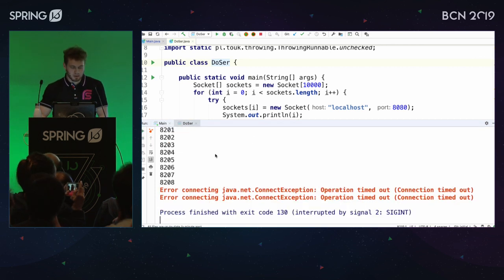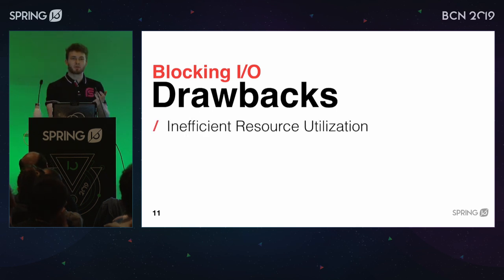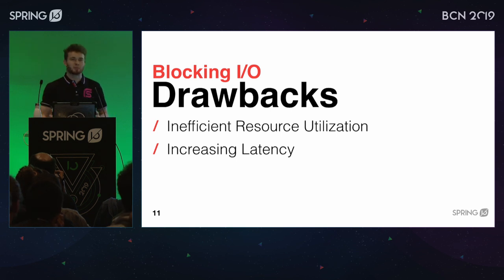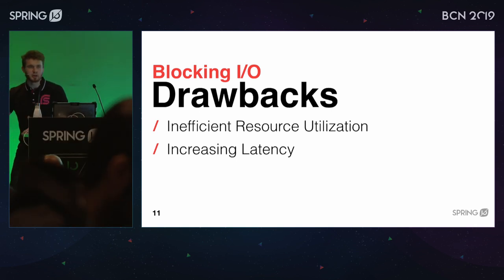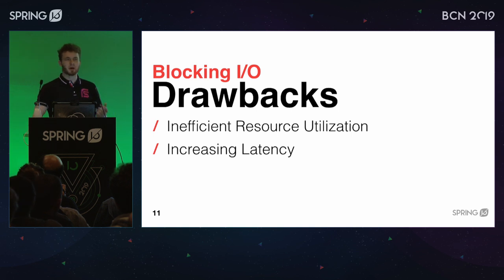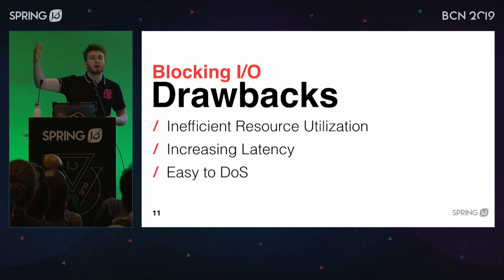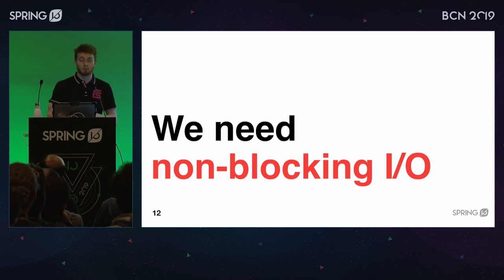To summarize the drawbacks of blocking IO: first, inefficient resource usage - the thread-per-connection model takes lots of memory. Second, increased latency in highly concurrent environments. Third, it's easy to exploit - someone can figure out your memory allocation and use long-lived connections to crash your servers. That's why we need non-blocking IO.